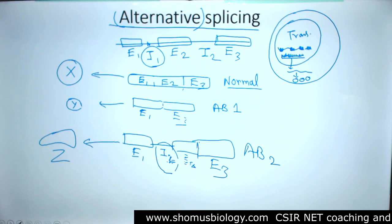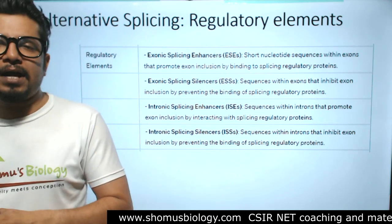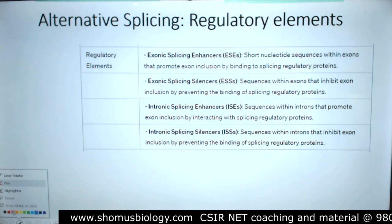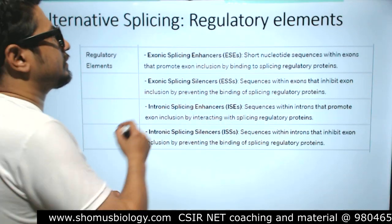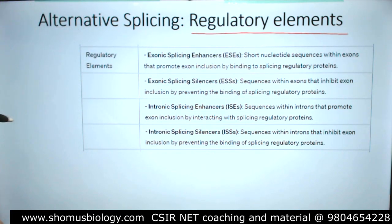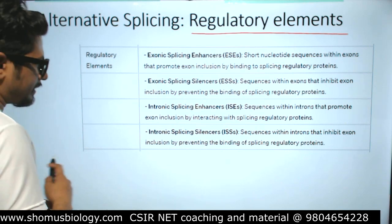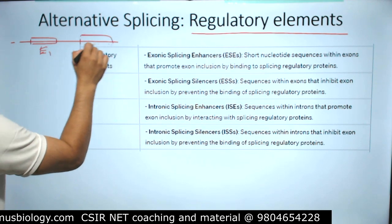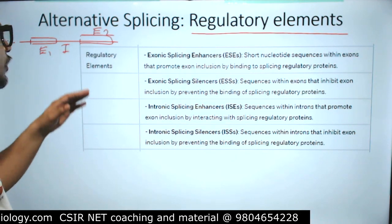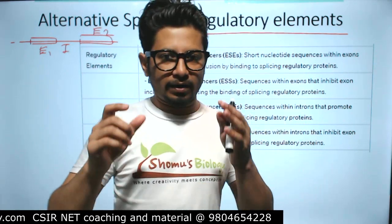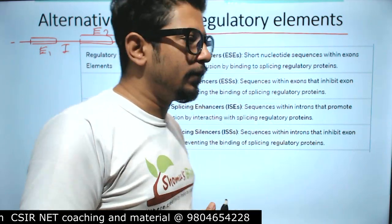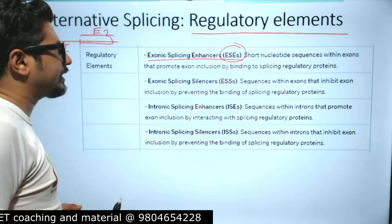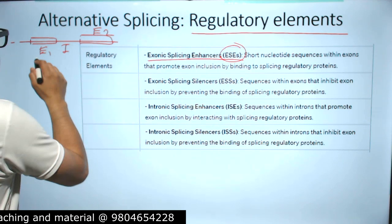Now let's look at the regulatory components of alternative splicing. The regulatory elements are specific nucleotide sequences found either in the introns or exons of the pre-mRNA before the splicing event. We have exonic splicing enhancers (ESEs) — short nucleotide sequences within the exons that promote exon inclusion — and exonic splicing silencers (ESSs) that signal for exon exclusion.